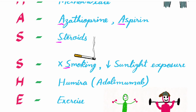S for avoid smoking and decrease sunlight exposure, H for Humira (also called adalimumab), E for exercise.